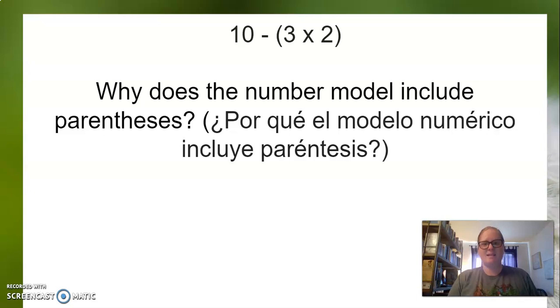Why does the number model include the parentheses? This kind of goes with what I was telling you before, in that the parentheses has to happen first. So that indicates that we have to do three times two first, and if it wasn't there, then you guys might have done ten minus three first. And then ten minus three equals seven, seven times two equals fourteen, and that's not the answer that we want.